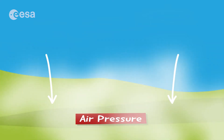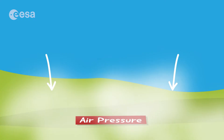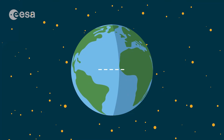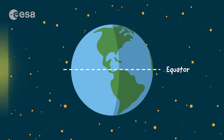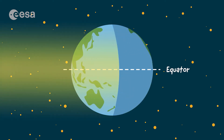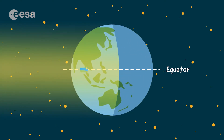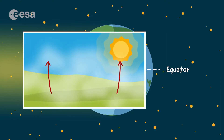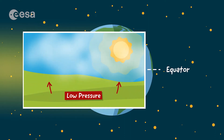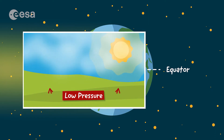If pressure changes, the air starts to move. I'll show you how! This is the equator, the part of the Earth that receives the most sunlight. The sun warms the air, making the gases spread out and rise into the atmosphere. This creates an area of low pressure on the surface.